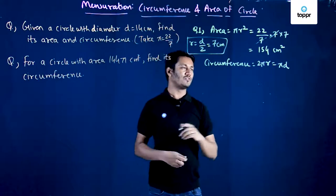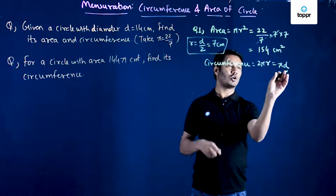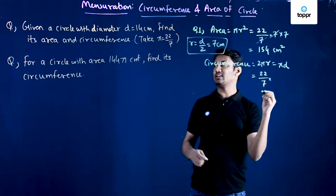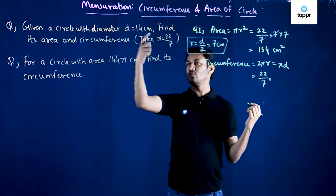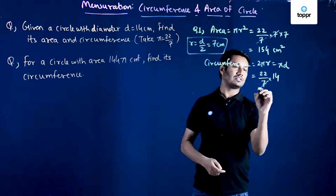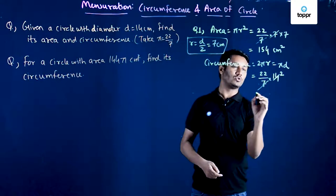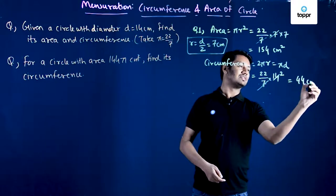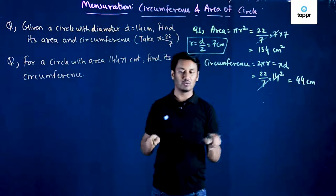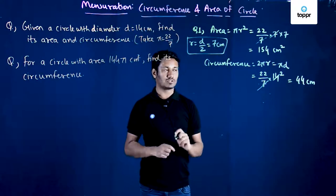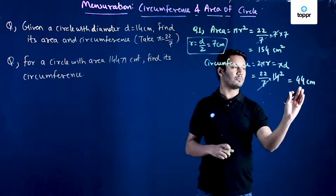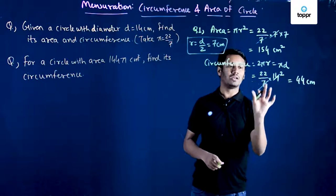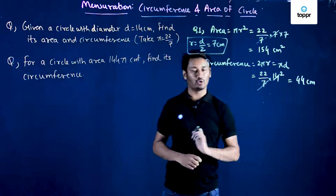Now for the circumference, I can use the formula πd. That gives (22/7) × 14. Since 7 × 2 = 14, this simplifies to 22 × 2 = 44 cm. So 44 cm is the circumference of the circle. This is an approximate value because we used the approximation 22/7 for pi.